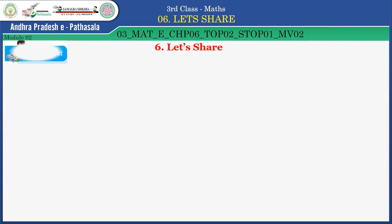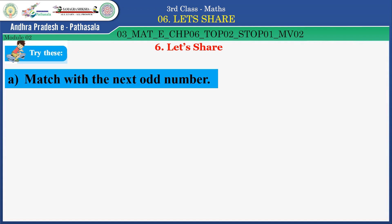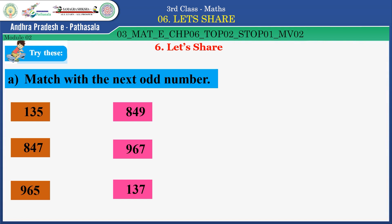Children, try this activity. You have to match with the next odd number. Look at this: 135 — the next odd number for 135 is 137. Now look at 847 — the next odd number is 849. Next: 965 — the next odd number for 965 is 967. Well done, children.